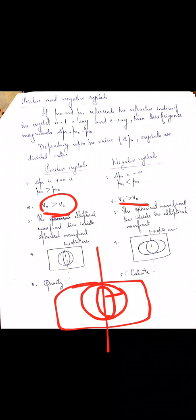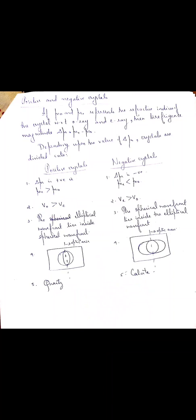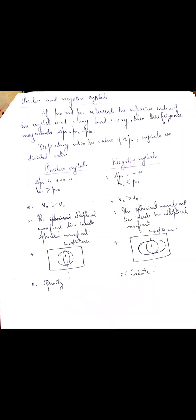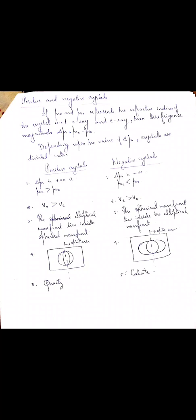In a positive crystal, mu E is greater than mu O, which means V_E must be smaller than V_O, so the ordinary ray travels faster than the extraordinary ray. In a negative crystal, V_E is greater than V_O, so the extraordinary ray travels faster. In terms of wavefronts for a positive crystal, the spherical wavefront lies outside the elliptical wavefront because the ordinary ray has greater velocity. For a negative crystal, the elliptical wavefront lies outside the spherical wavefront. An example of a positive crystal is quartz and an example of a negative crystal is calcite. Please go through the notes given and contact me if you have any doubts.